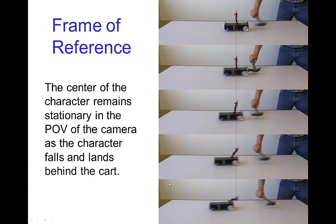If we go frame by frame starting with the initial position of the doll, we see that the doll actually stays in the same spot — at least the center of the doll stays in the same spot, but it rotates around that spot — as the car moves out from underneath. So in this case it falls out the back of the car, but from the point of view of the camera, it is actually remaining stationary.